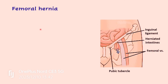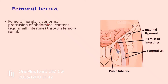Moving to the applied aspect — femoral hernia. Femoral hernia is the abnormal protrusion of abdominal contents, usually loops of small intestine, through the femoral canal. Hernia is the protrusion of any viscera through a potential gap into an area which is not its normal site. In femoral hernia, the intestinal loops protrude into the femoral canal through the femoral ring.